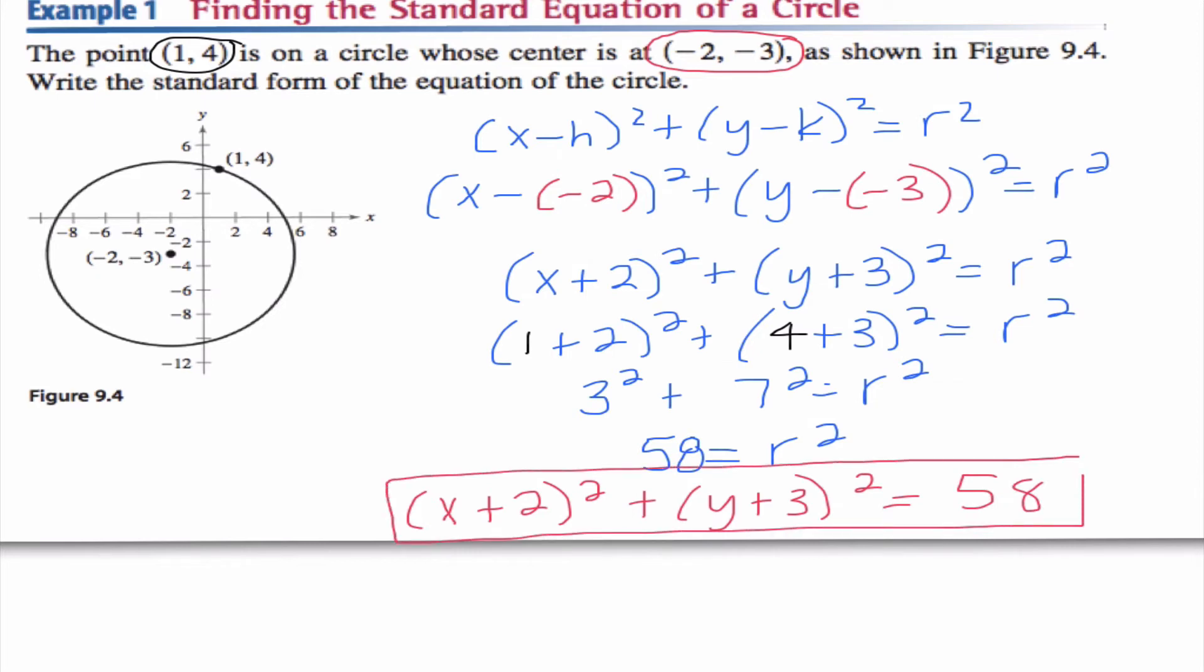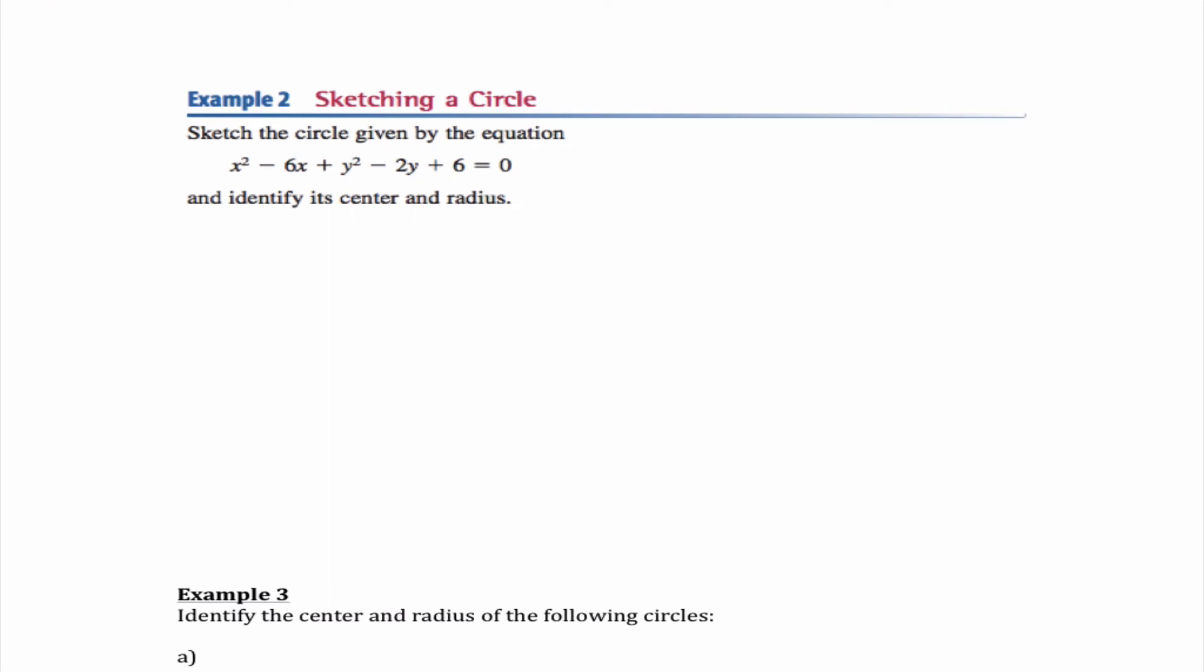So just to make sure that this works, we notice (-3, -2) is the center we would get from looking at this particular equation. Also, if I substituted (1, 4) in here, I should get 58 as our solution. So that's one type of problem that we're going to be doing today. You guys will notice we're really spending a little bit of time on each section because a lot of this is review for us.